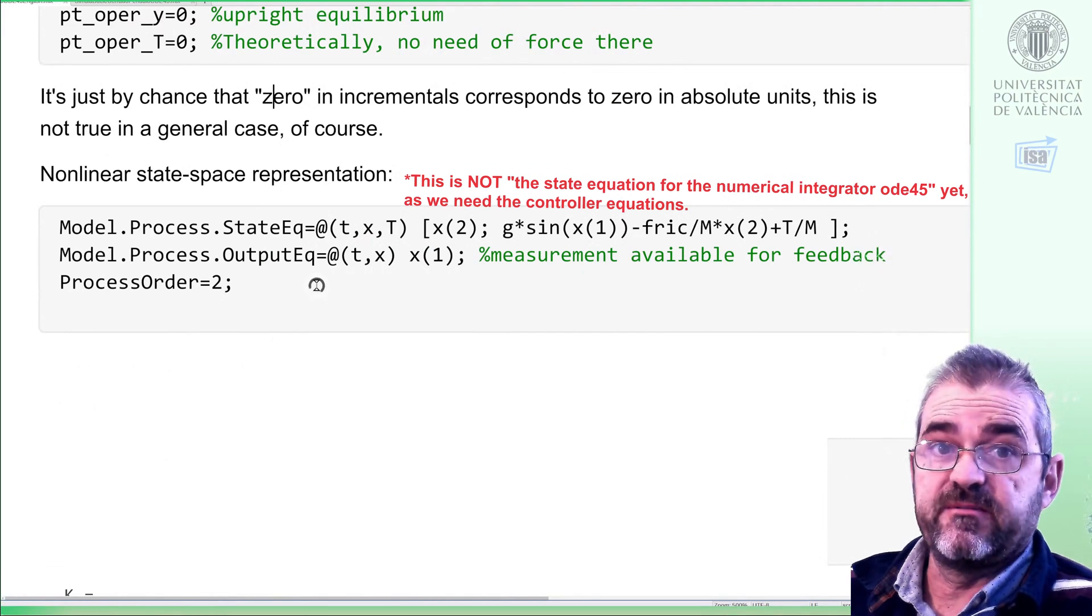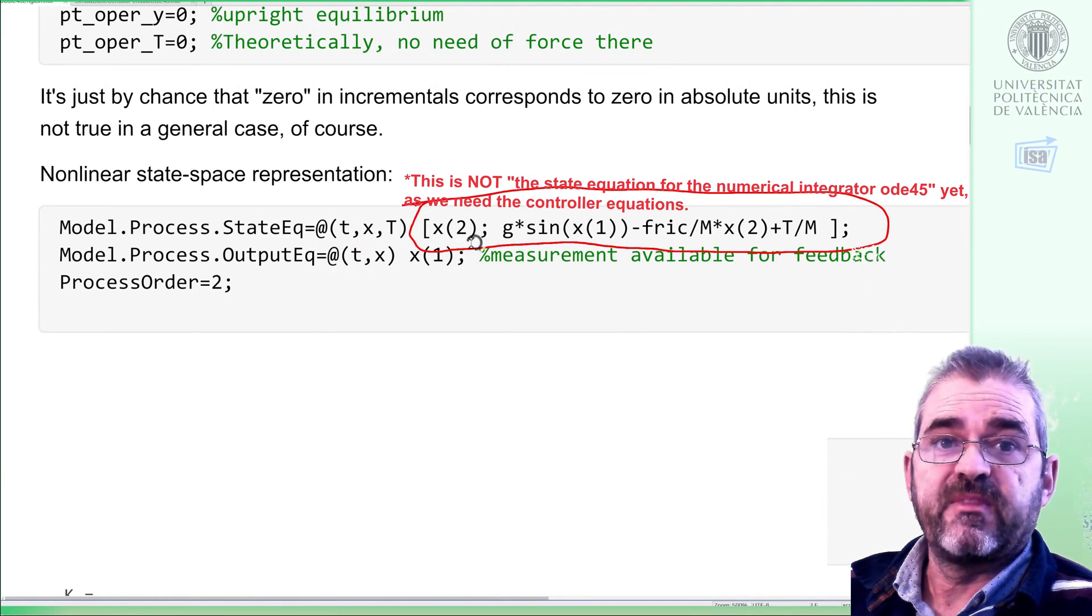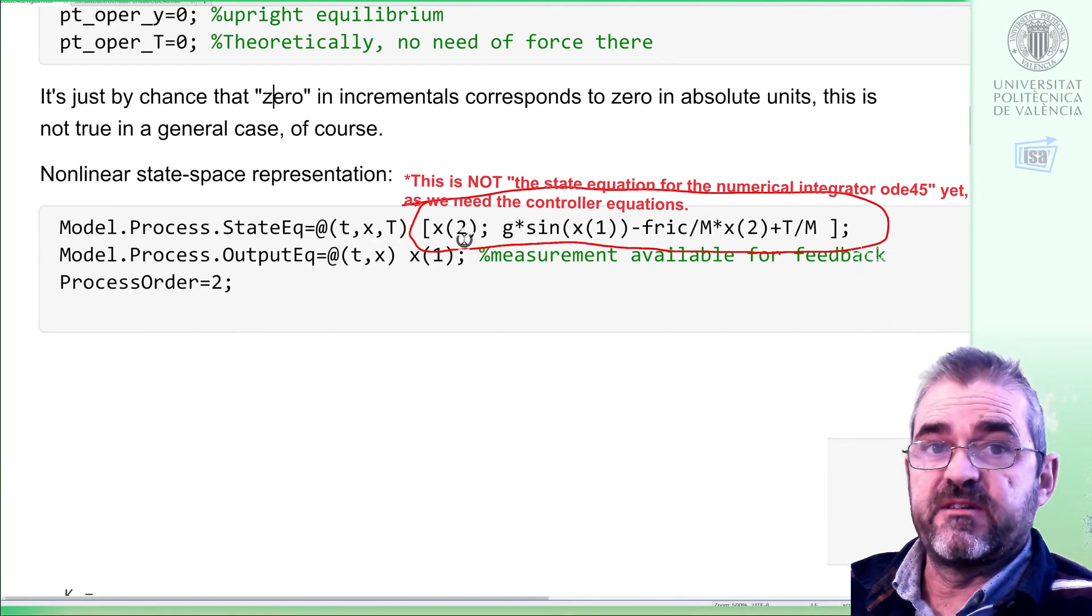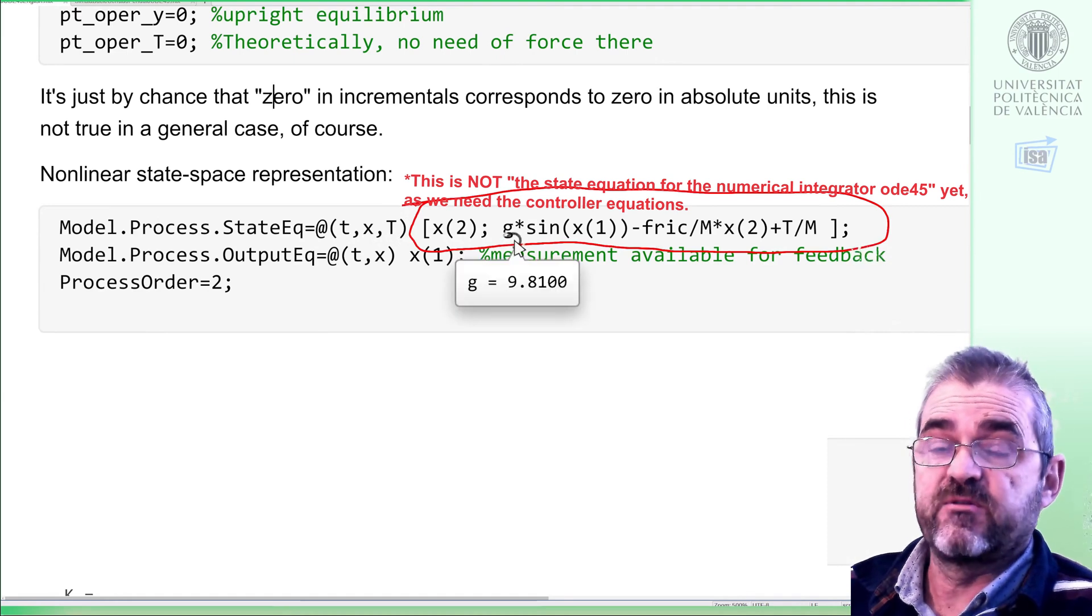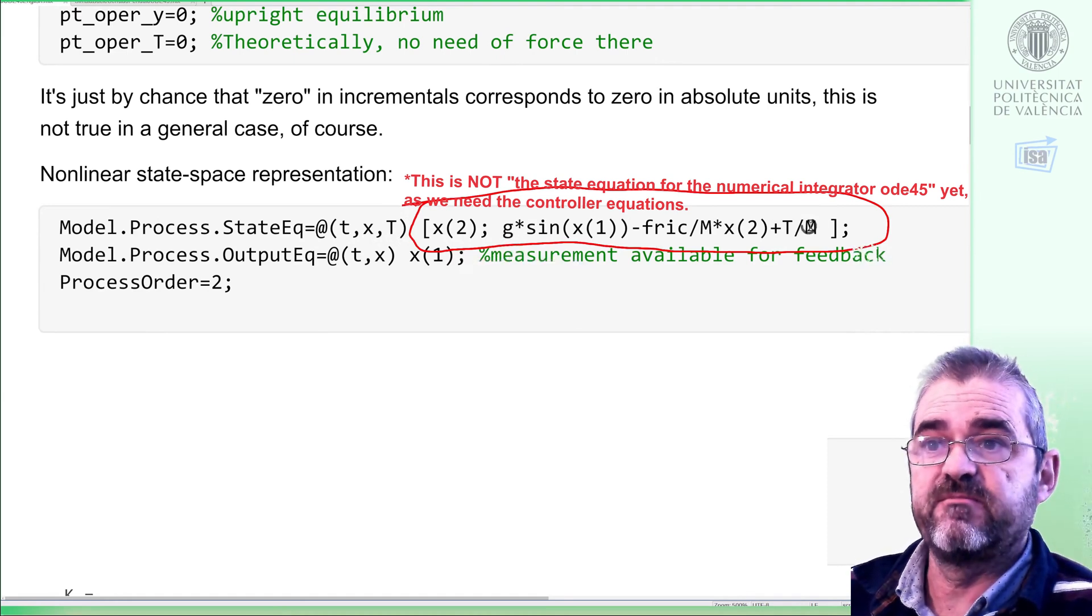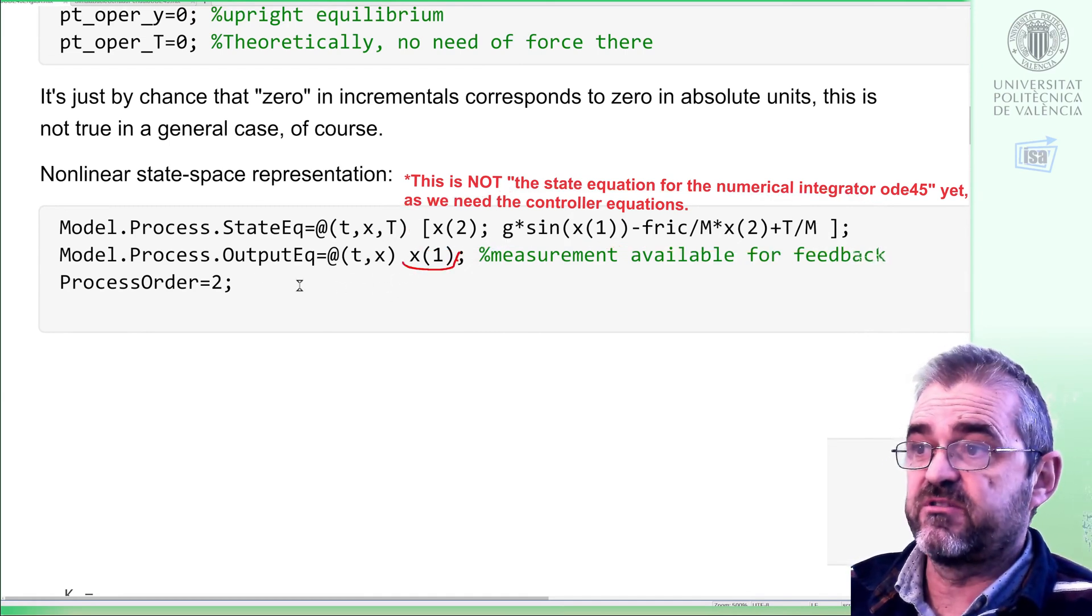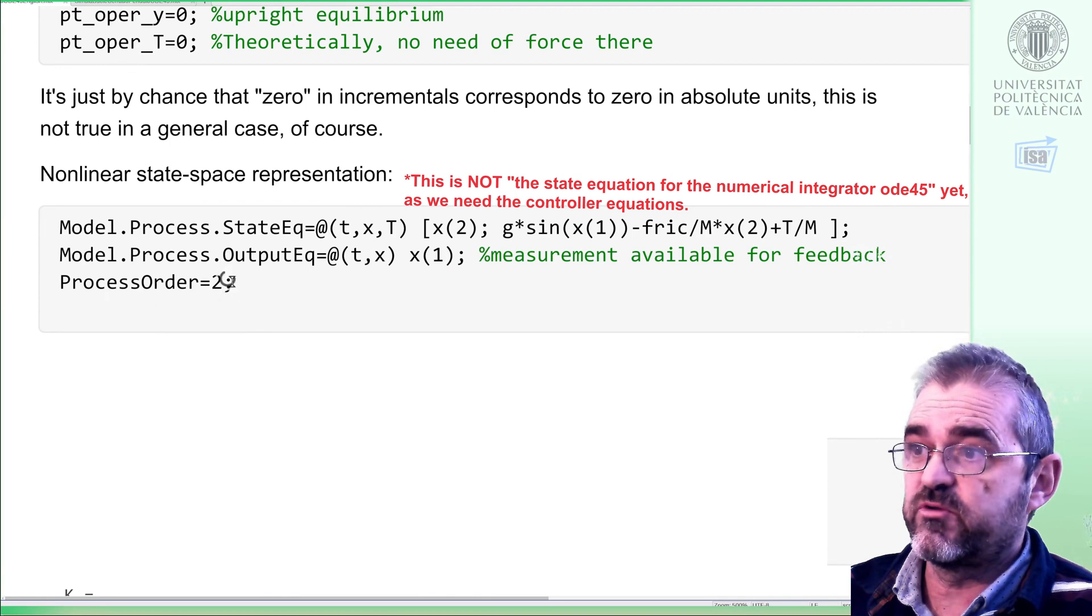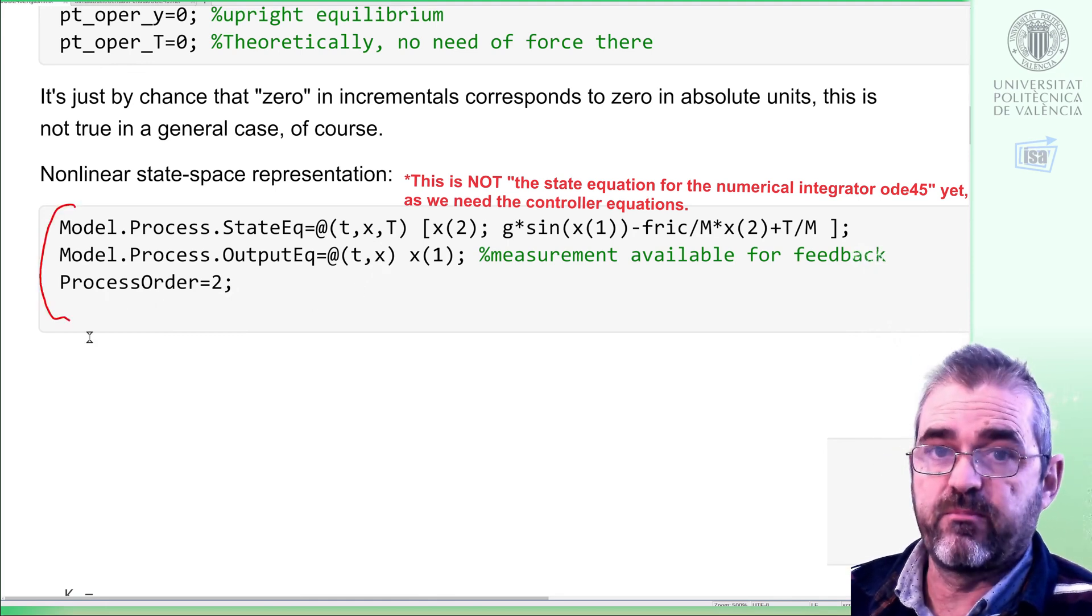The above equations will be encoded in MATLAB as a state equation like this. It will input clock, state, and input, and the derivative of the first state will be the second one. The time derivative of the second state will be the acceleration, this expression. The output that will be available for feedback is just the position. The process order will be two because we have two states. So this is the model of my process.